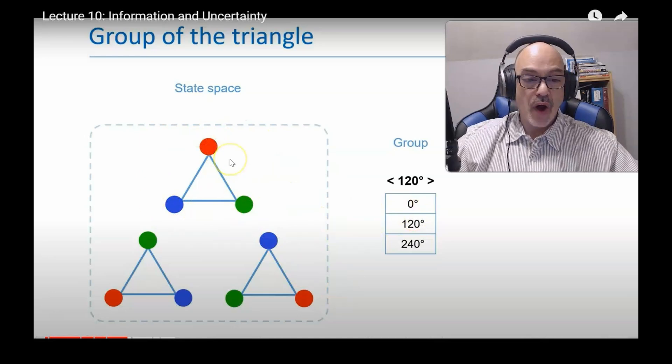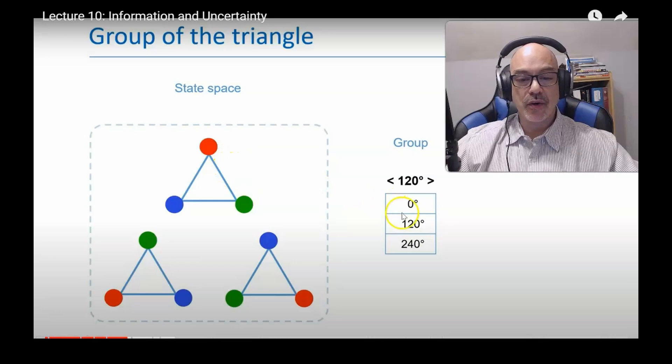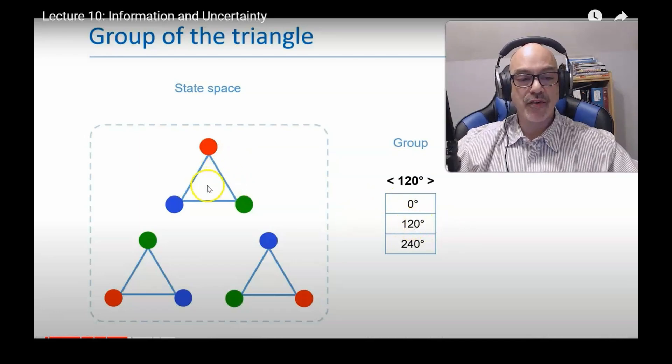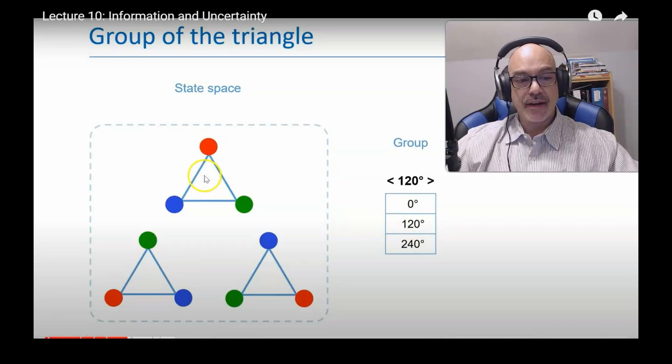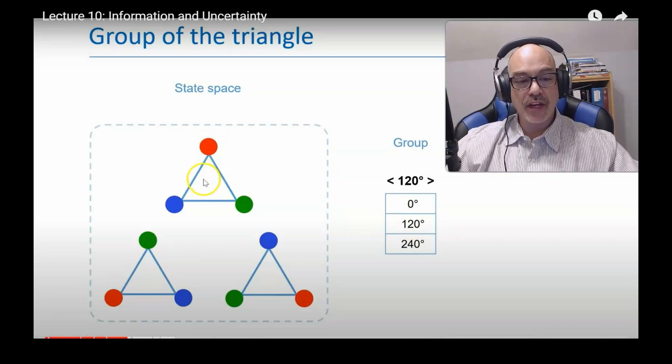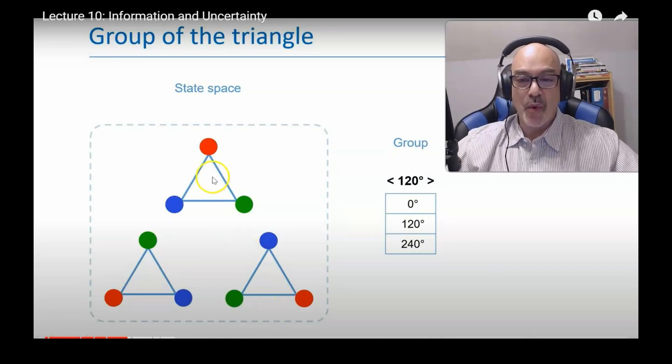One operation that I can do is I can rotate by 120 degrees about the center of the triangle, and if I do that, it goes from one location, from one basis vector in the state space to another, from one triangle to another.